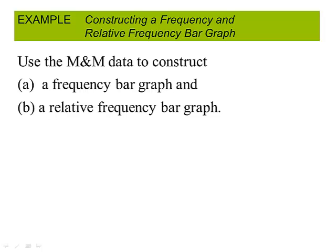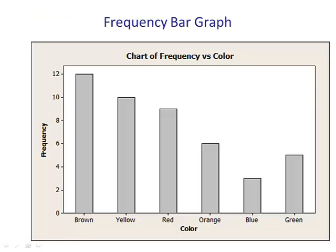Let's use our M&M example. First we will do a frequency bar graph, and then we'll do a relative frequency bar graph. As we can see, we have 12 for brown, we have 5 for blue, so on and so forth.